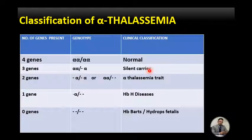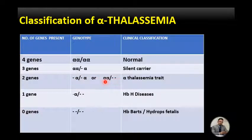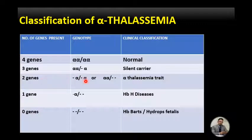When two genes are present and two genes are deleted, this is called a two-gene deletion. The two deleted genes may both be on one chromosome or one on each chromosome. This form is known as alpha thalassemia trait.